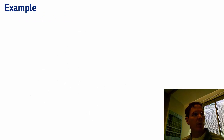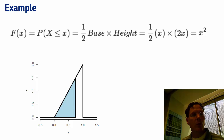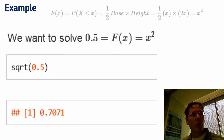Let's work through the previous example: what is the median of the distribution we were working with? The distribution looked like a right triangle, and the distribution function F(x) worked out to simply be x squared, where x is between 0 and 1. To find the median, we solve 0.5 = F(x) = x squared, resulting in x = square root of 0.5, which is approximately 0.7. This means that on about 50% of days, 70% or fewer of the phone calls get answered, and on about 50% of days, 70% or more get answered.